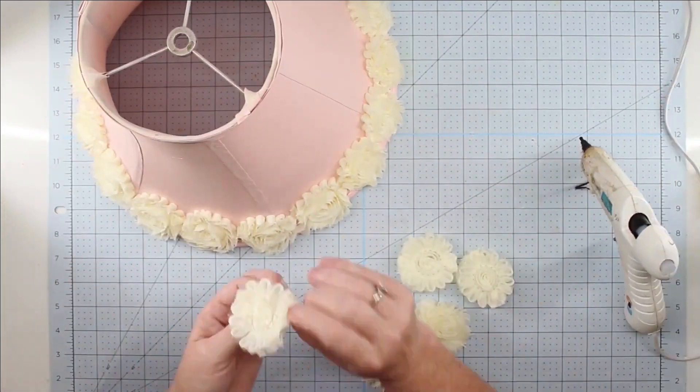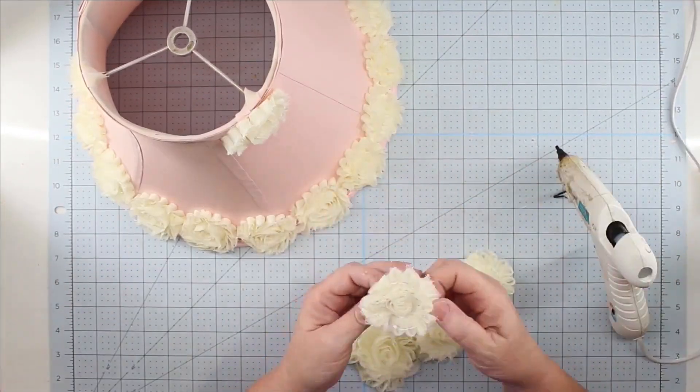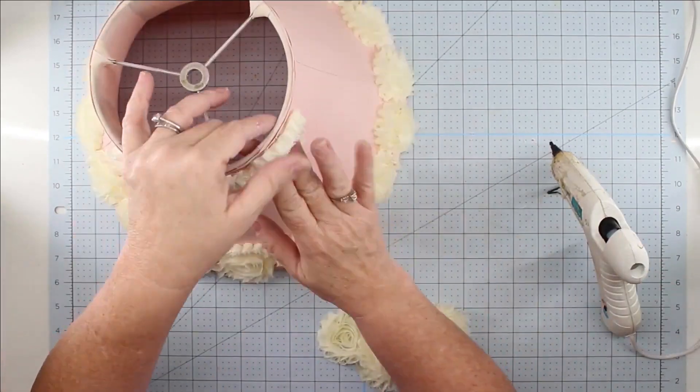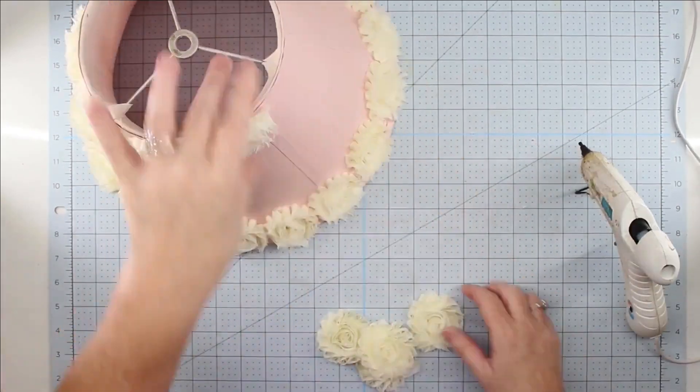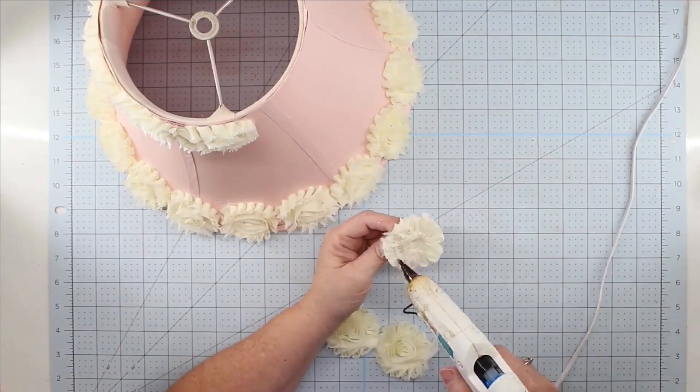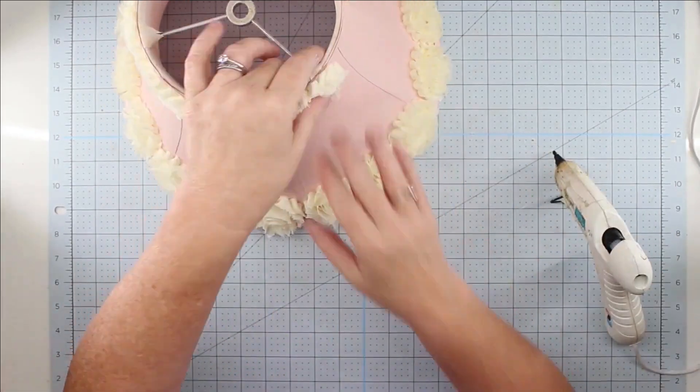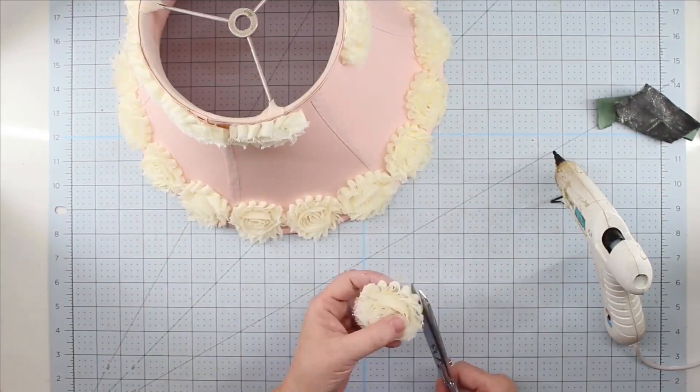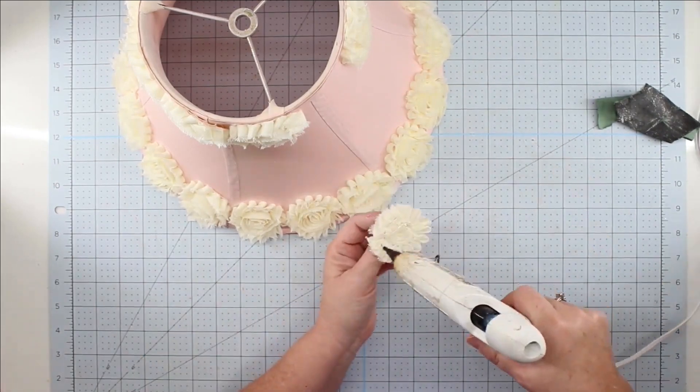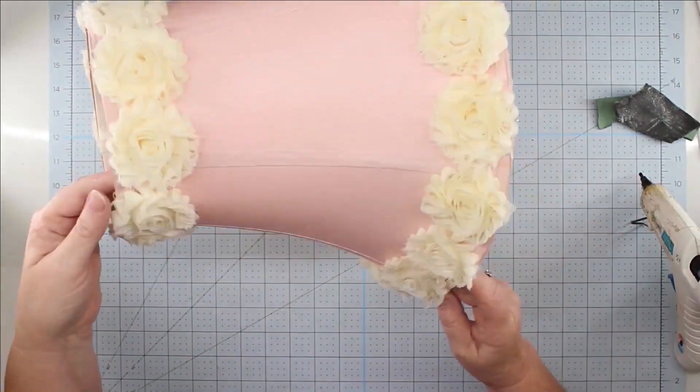Once we get these around the bottom of the lamp, we're going to do the same thing around the top. I think this just kind of finishes it up and ties it all together. Y'all, I fell in love with this piece. I was going to give it to my friend's granddaughter but I think I'm going to end up keeping it in my office. Once we get these on here, we're going to put this back together and it'll be finished.